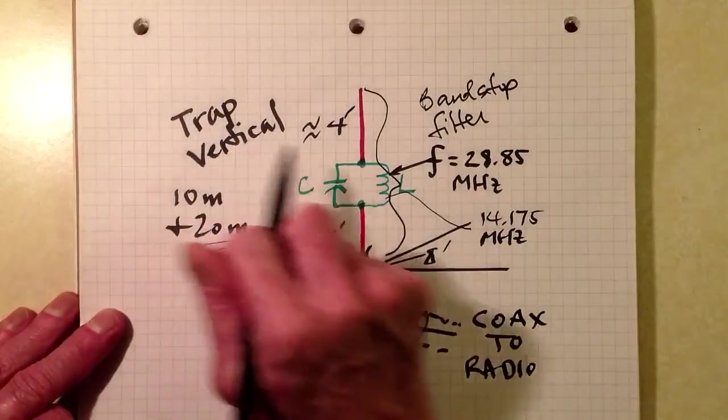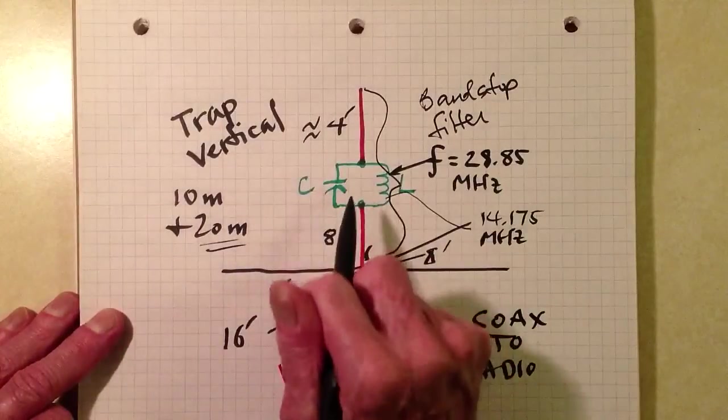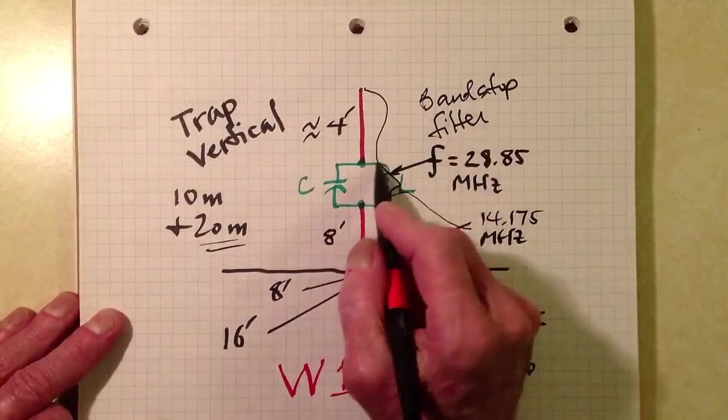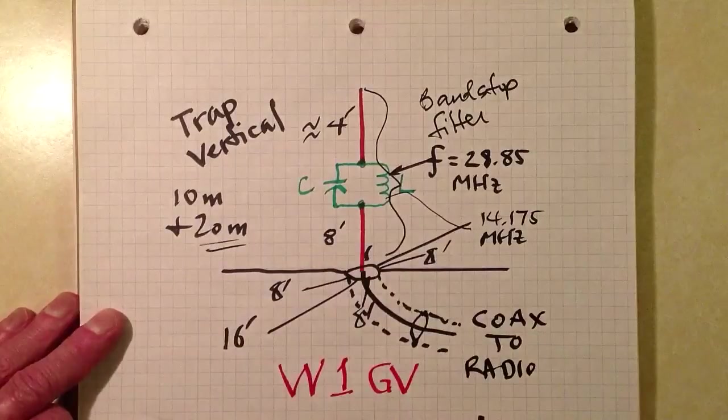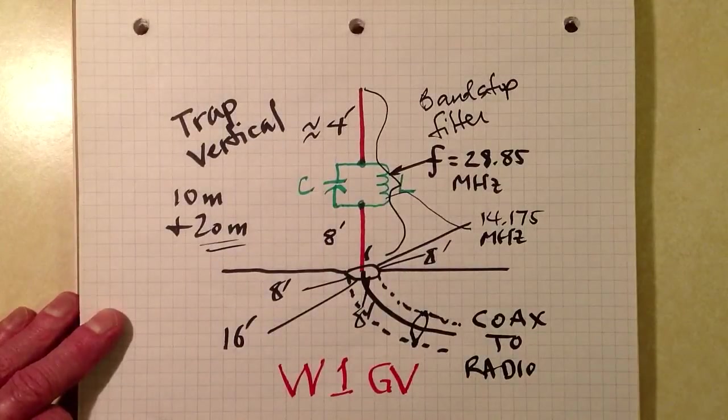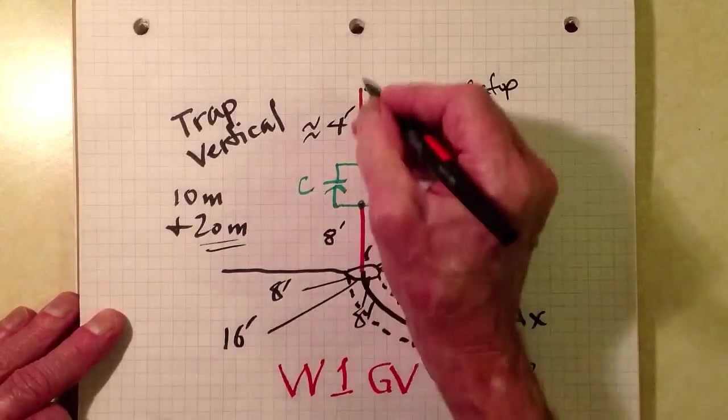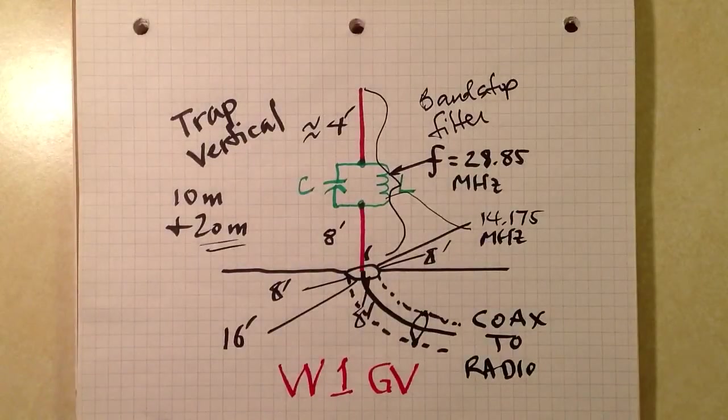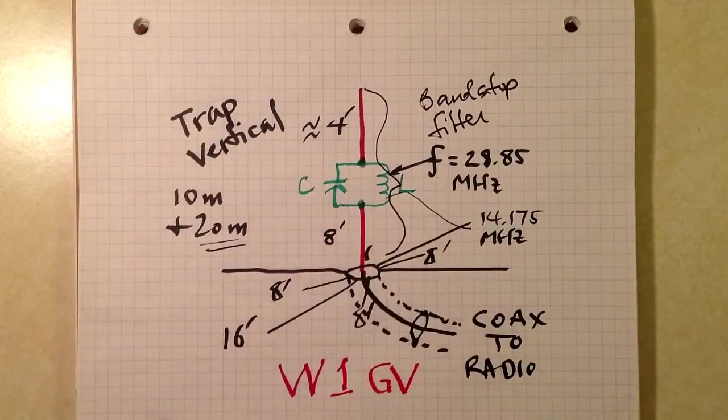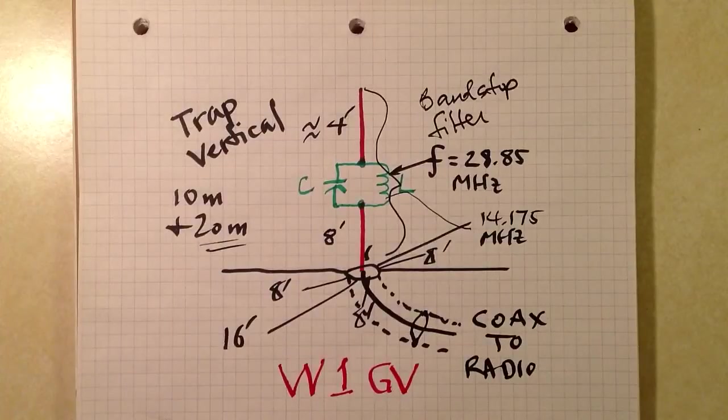But that's how a trap antenna generally works. This trap acts as a choke or a band stop filter on certain bands so that only certain parts of the antenna below that trap can function on that band.